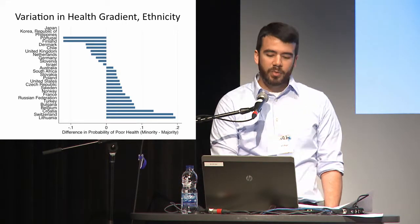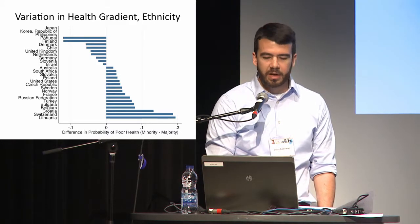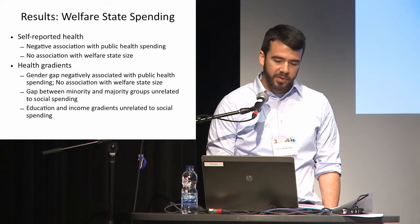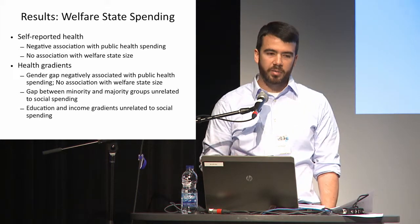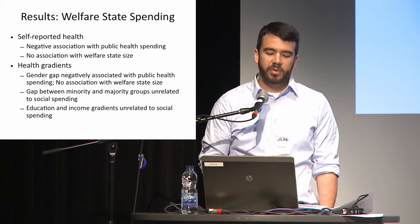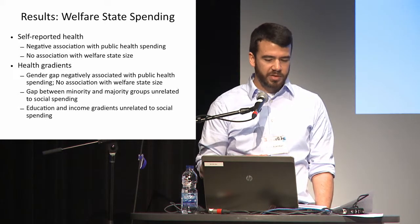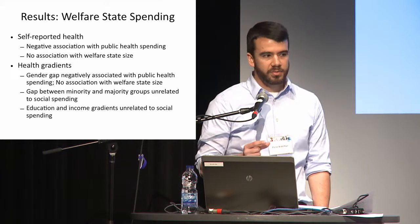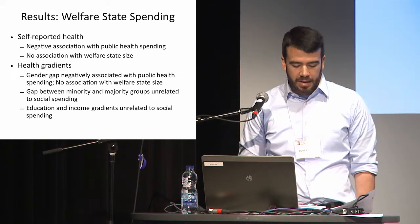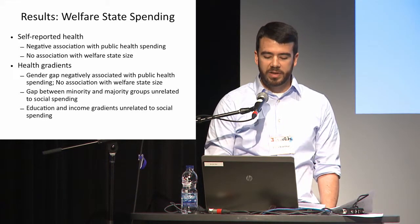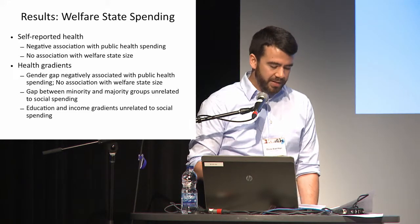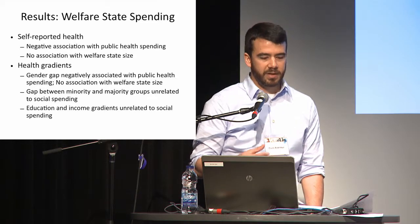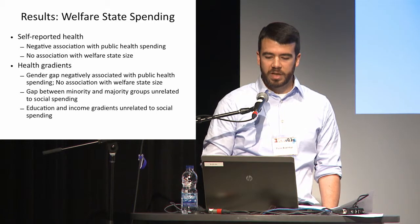Our next question is whether there's any association with welfare state spending. Looking at overall self-reported health, we saw no association with overall welfare state size — our measure of total social expenditures — but we did see a negative association with public health spending. When we look at the gradients, we saw something similar with gender: no real association with total welfare state size, but smaller gradients in countries with larger health spending. For income, education, and minority status, we didn't see significant associations, although for education and income there was a suggestive direction — countries with higher levels of health spending had slightly lower education and income gradients.